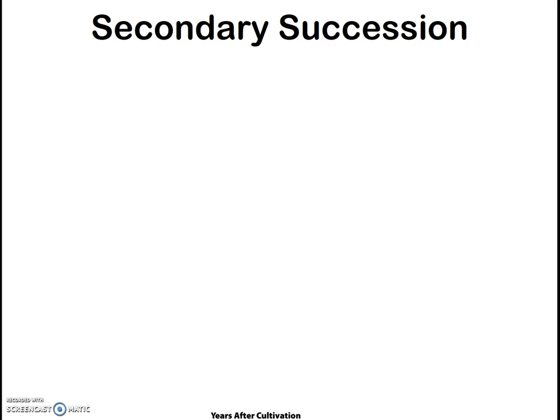The second type of succession is called secondary succession. Just like primary succession, it involves the change in an ecological community in a location over time. It's different, however, in that secondary succession takes place in an existing community where there is already life present. It takes place after some sort of disturbance.